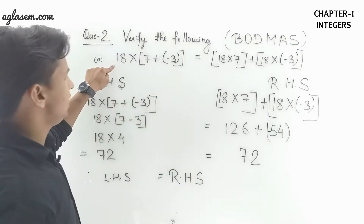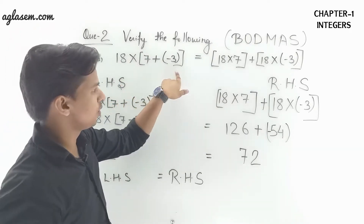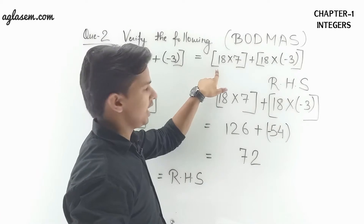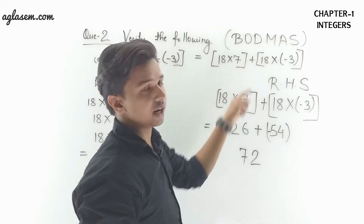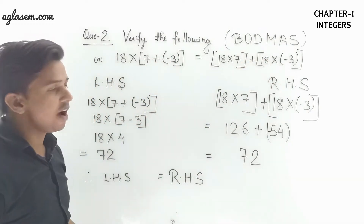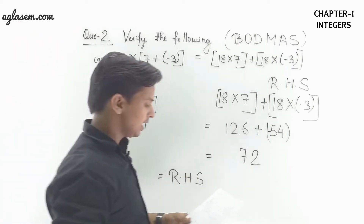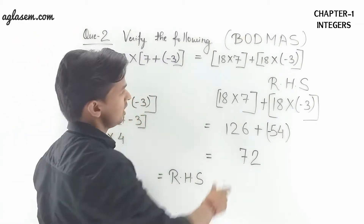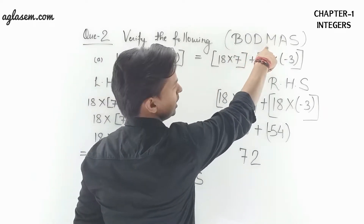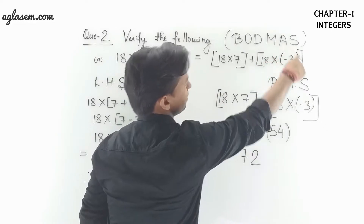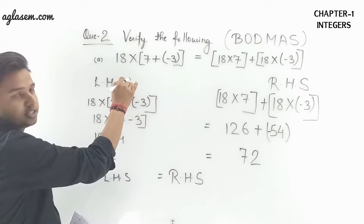The first part is 18 × (7 + (-3)) = 18 × 7 + 18 × (-3). We have to verify that LHS equals RHS. For that we have to use BODMAS — that is Brackets, Division, Multiplication, Addition, and Subtraction. So let's start with the solution. First we take the left hand side and solve it.